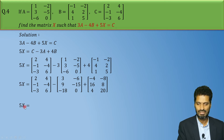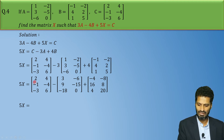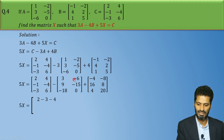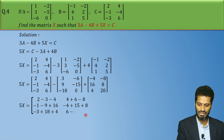Now in the next step, 5X remains as it is. We subtract the 3A matrix and add the 4B matrix element by element. First element: 2 minus 3 minus 4. Then 4, plus 6, minus 8. Then minus 1, minus 9, plus 16. Then minus 4, plus 15, plus 8. Then minus 3, plus 18, plus 4. And finally 6, minus 0, plus 20.